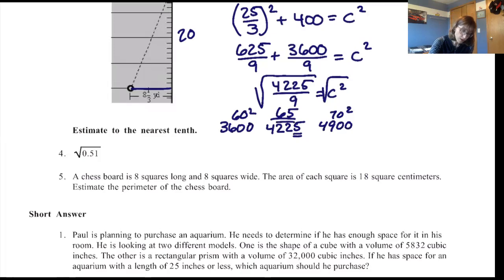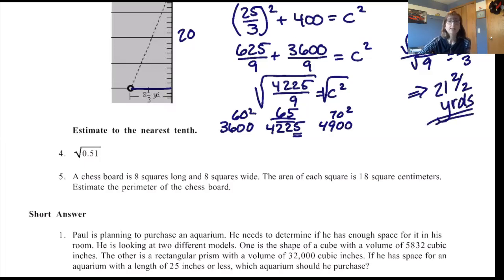So going back over here to this problem, I was at the square root of 4225 over the square root of 9, which is going to be 65/3, which after you reduce that you end up with 21⅔ yards. That's how long the pass actually was.